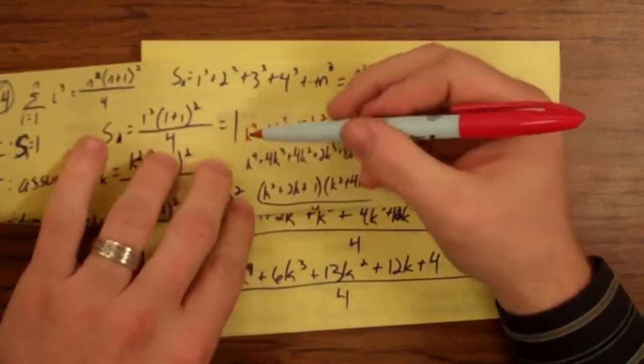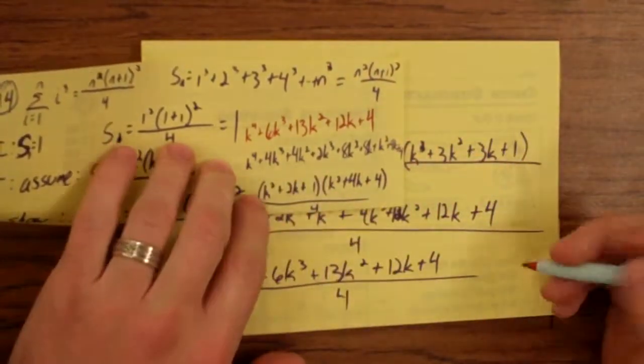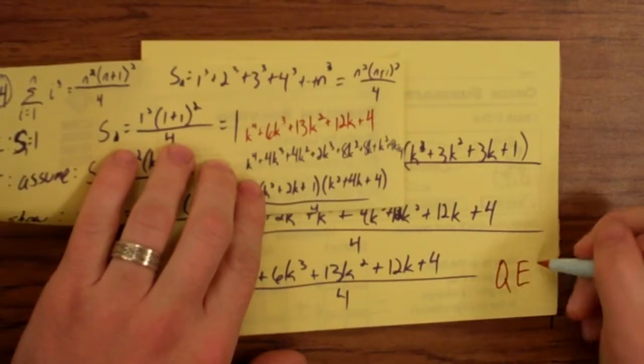Let's see, is this the same as the thing we want to show? So, let's see, we've got k to the fourth, 6k to the third, 13k squared, 12k, and 4. So, yeah, we are done with that.